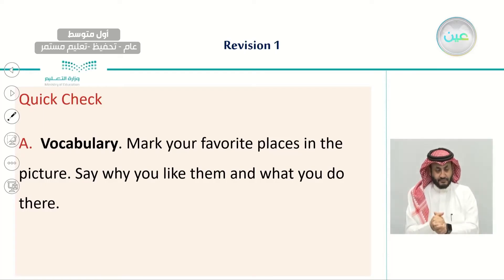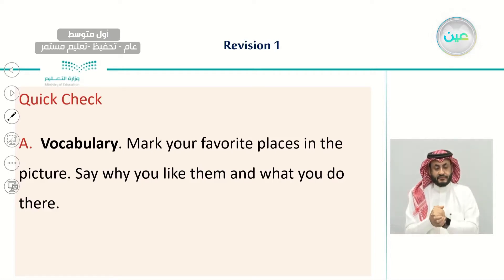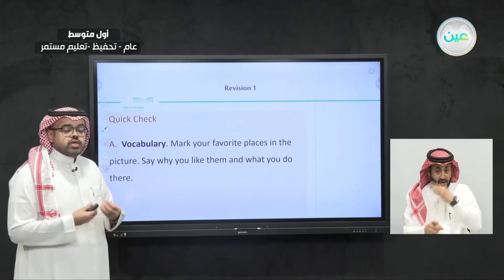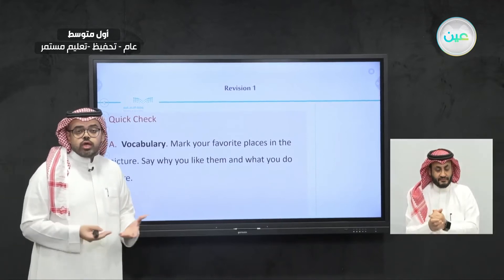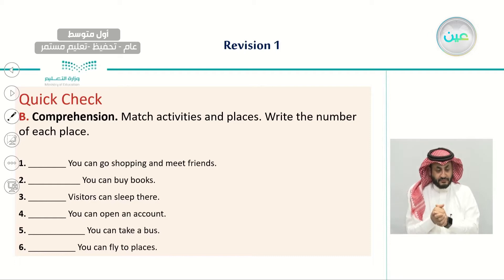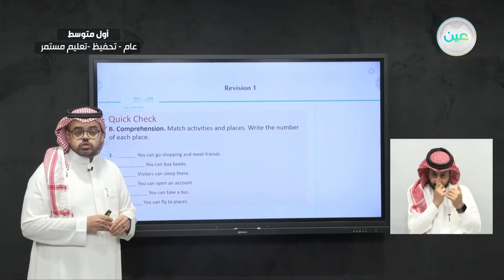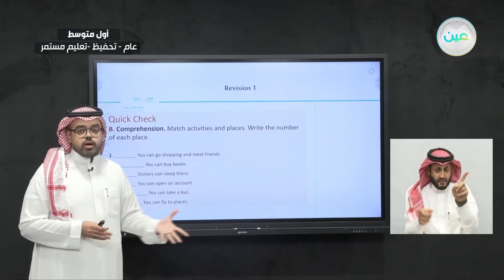We also answered a vocabulary question: mark your favorite places in the pictures and say why you like them and what you do there. We discussed all 12 places and the activities you like to do at each. Then we had a comprehension exercise where you match activities to places and write down the number of each place according to the pictures.